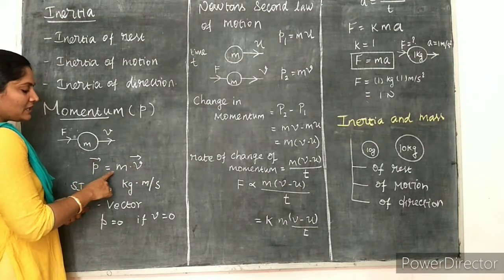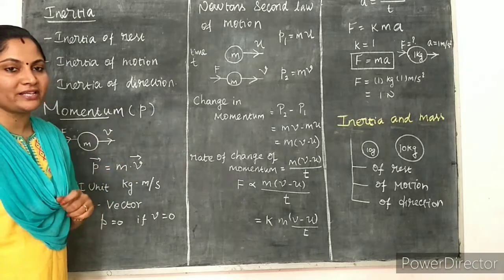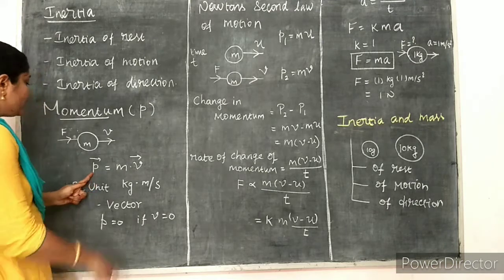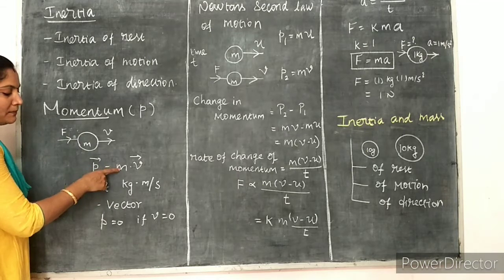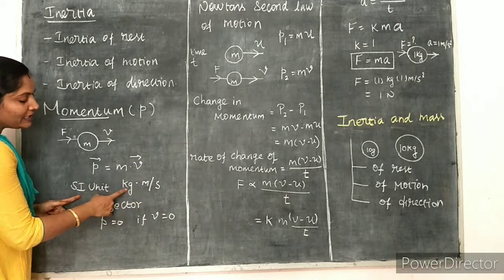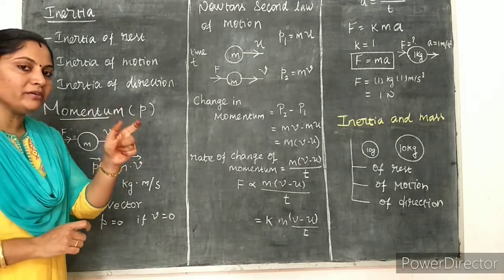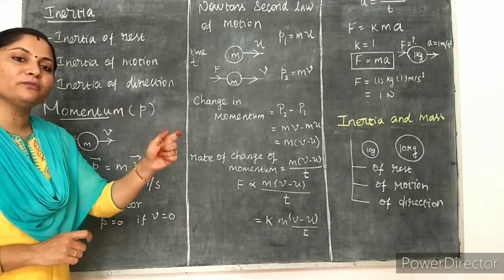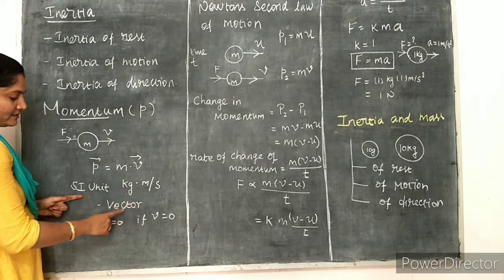P vector equals M into V vector. Momentum is a vector quantity because velocity is a vector quantity — when you multiply a scalar by a vector, you get a vector quantity. The SI unit of momentum: the unit of mass is kilogram, and the unit of velocity is meter per second, so the SI unit of momentum is kilogram meter per second.